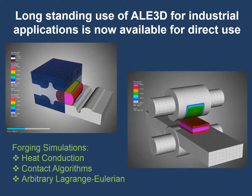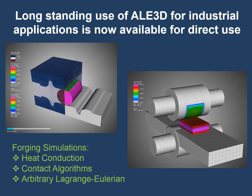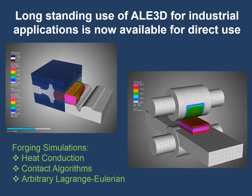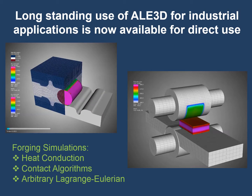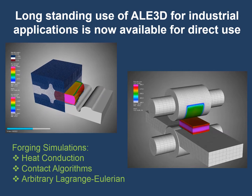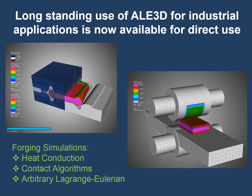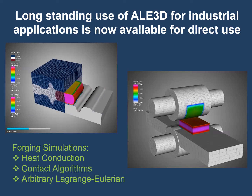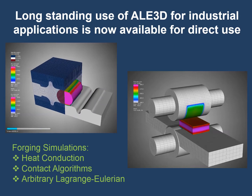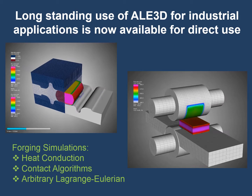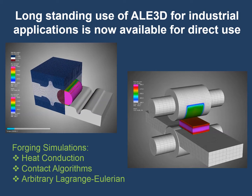AL3D has had long-standing use for industrial applications, two of which are shown here, and the code executable is now available for direct use by industry and university collaborators. The two examples shown are metal forming or forging simulations. The simulation on the left shows a heated material being pressed between a die. The die elements remain Lagrangian and the aluminum, as it gets pressed, gets pushed and extruded towards the grooves to the left and the right. The material flows through the mesh in an ALE or Eulerian sense. On the right is a roller and ingot simulation. The rollers are given an angular velocity and the ingot is grabbed by the roller using friction in the contact algorithms within AL3D. Heat conduction is turned on, as evidenced by the temperature rise in the rollers as the hot ingot makes contact. Simulations such as these can help design and optimize the manufacturing process without expensive trial and error, which can be performed in a virtual sense using high performance computing and AL3D for Industry.